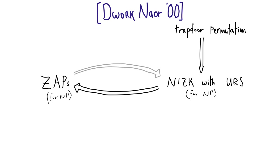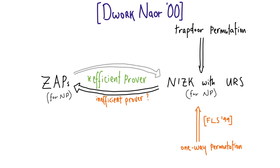What did Dwork and Naor show about ZAPs? They showed that ZAPs are equivalent to NIZKs in the uniform random string model. You might wonder why we have NIZKs implied by trapdoor permutations yet only show ZAPs hold from the comparatively weaker assumption of one-way permutations. The reason is that this transformation critically only applies if the prover is efficient, and the construction from Feige, Lapido, and Shamir is inherently inefficient.